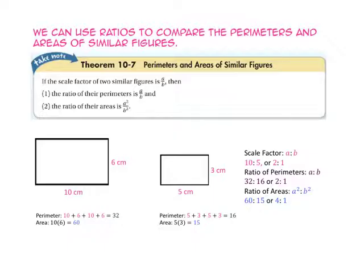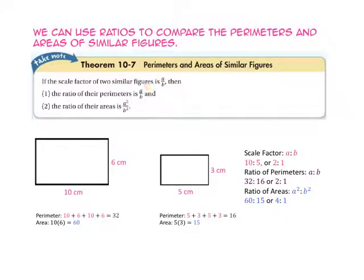We can use ratios to compare the perimeters and areas of similar figures. Theorem 10-7 shows us the relationship between the scale factor of similar figures and the ratio of their perimeters and areas. If the scale factor of two similar figures is A to B, then the ratio of their perimeters is also A to B, and the ratio of their areas is A squared to B squared.